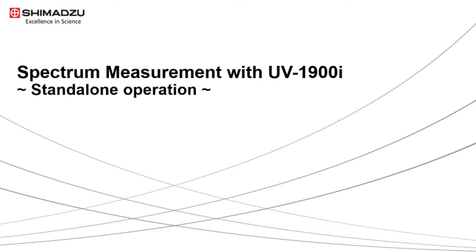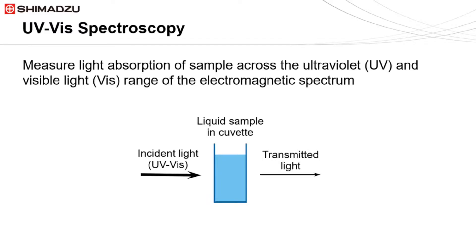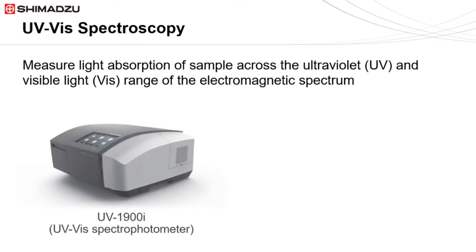In this video, we will go through the standalone operation on spectrum measurement for UV-1900i. UV-VIS spectroscopy is an analytical technique that measures light absorption of a sample across the ultraviolet and visible range of the electromagnetic spectrum. This can be done using an instrument known as a spectrophotometer, such as the UV-1900i, which provides the data in the form of an absorption spectrum.